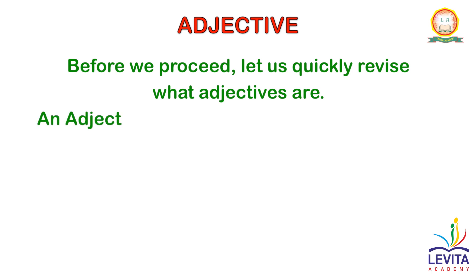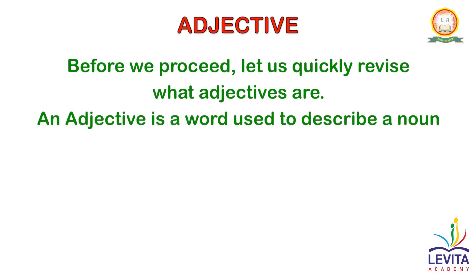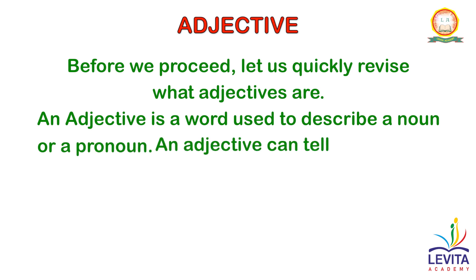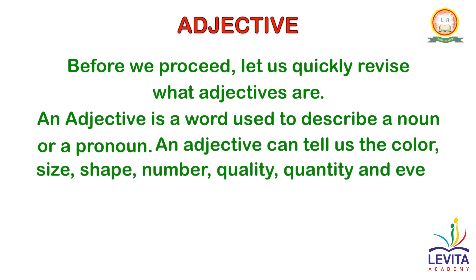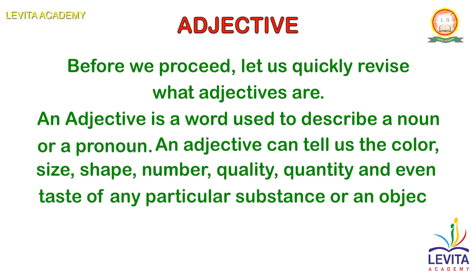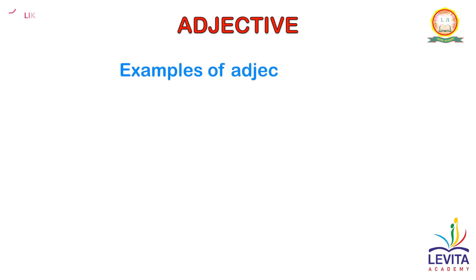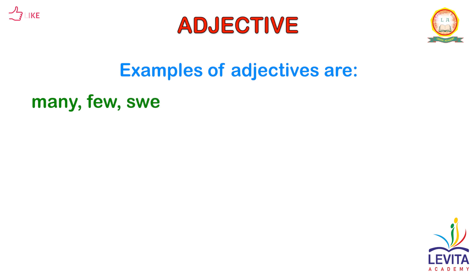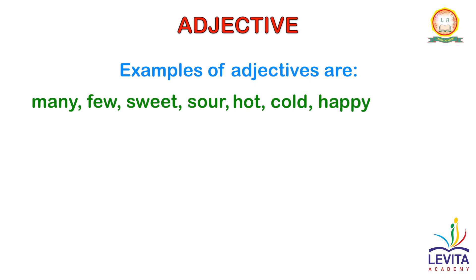An adjective is a word used to describe a noun or a pronoun. An adjective can tell us the color, size, shape, number, quality, quantity, and even taste of any particular substance or an object. Examples of adjectives are many, few, sweet, sour, hot, cold, happy, sad, etc.